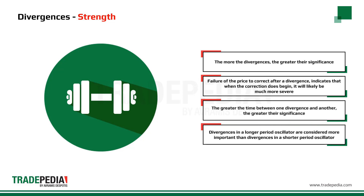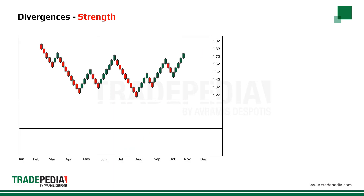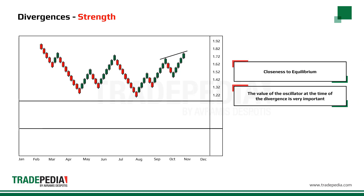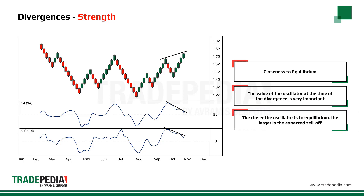Divergences in a longer period oscillator are considered more important than divergences in a shorter period oscillator. A critical element to the strength of a divergence is the closeness of the momentum oscillator to its equilibrium level. Note how the RSI and ROC are close to their equilibrium level at the time of the divergence. The closer the oscillator is to the equilibrium, the larger the expected sell-off.